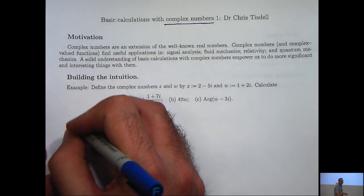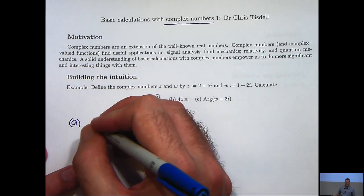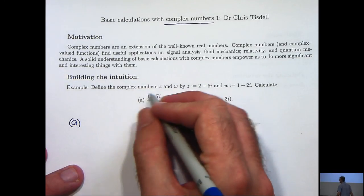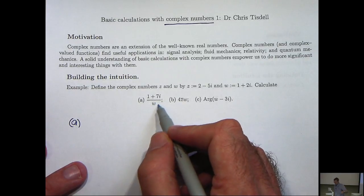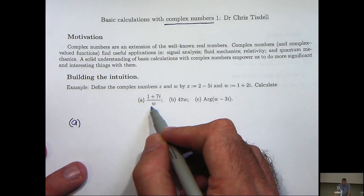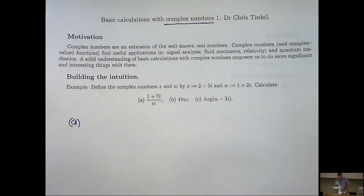In the first case we have the division of one complex number by another complex number. What we would like to do is get this denominator to become a real number. That way the whole expression is simplified and we can for example plot it very easily on an Argand diagram. So how do we do that?